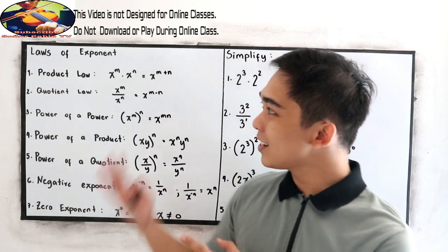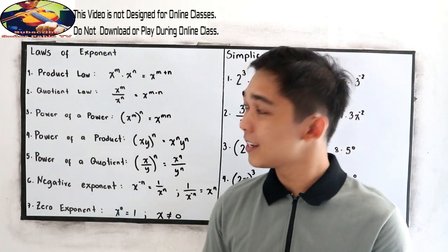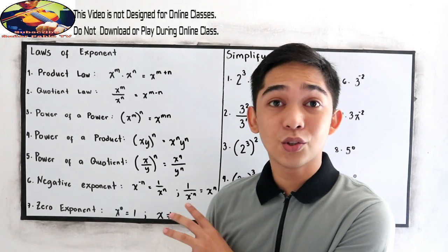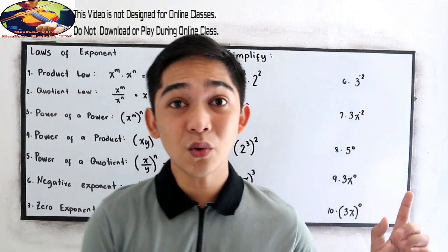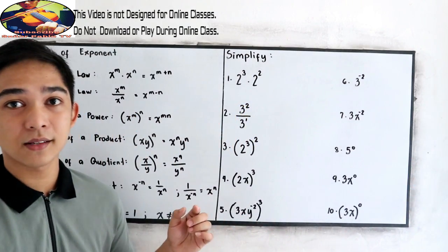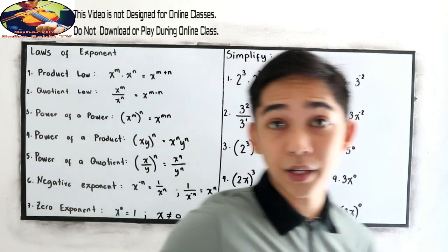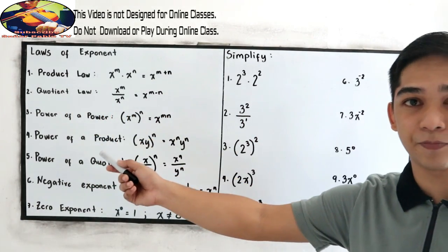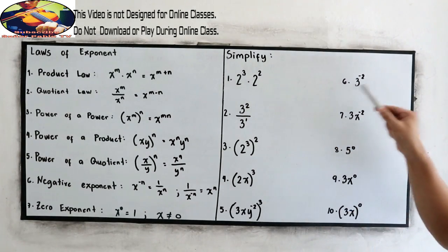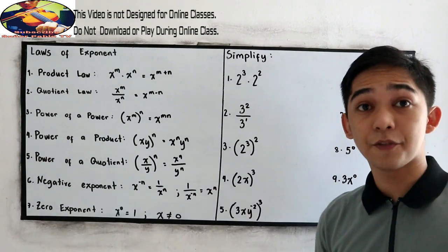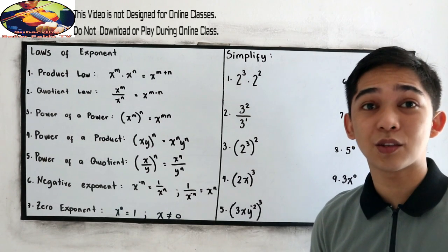Those are the laws of exponents. Now let us apply them to better understand. I have here 1 to 10 problems and we're going to simplify using our laws of exponents. If you want to try numbers 1 to 10, you can pause the video, then after answering resume watching to check your answers.